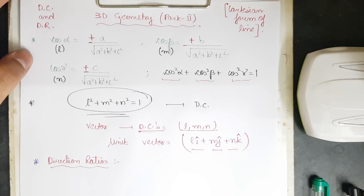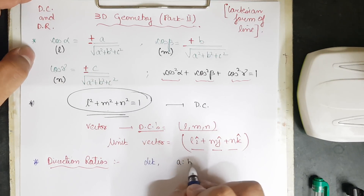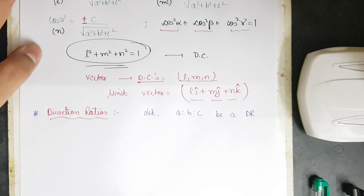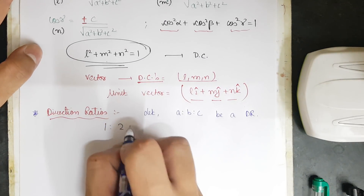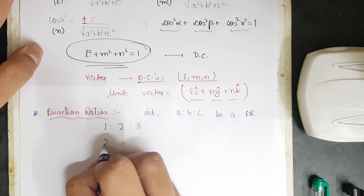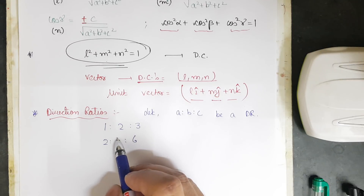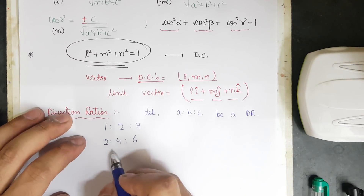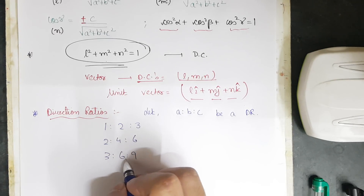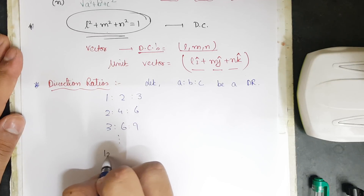Now let us understand direction ratios, which are used for deriving the Cartesian form of a straight line. If we say DR is a:b:c, the simplest example is 1:2:3. Similarly 2:4:6 is also a DR for the same thing, because multiplying all three by 2 gives 2:4:6. Multiplying by 3 gives 3:6:9, and these all reduce to the same ratio 1:2:3.